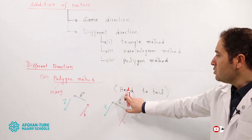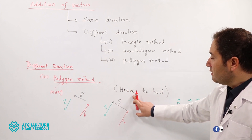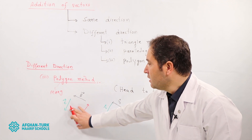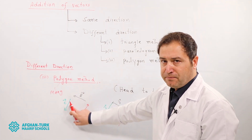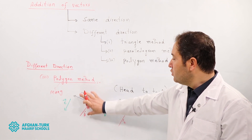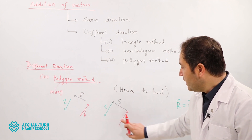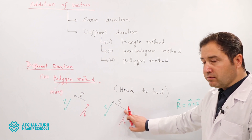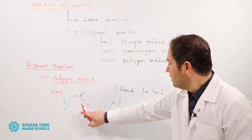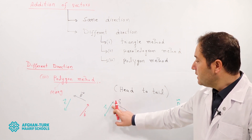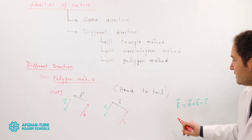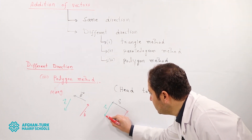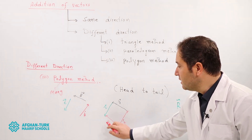The polygon method is also called the head-to-tail method. In the polygon method we use the head-to-tail rule. For example, if we have three vectors A, B, and C, we join the head of the first vector to the tail of the next vector. The resultant vector is drawn from the tail of the first vector to the head of the last vector.